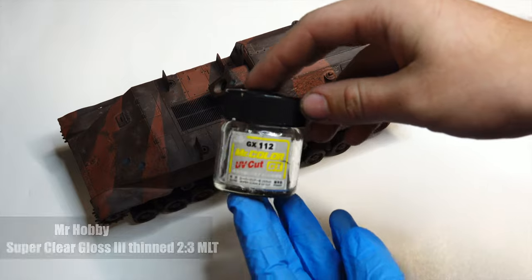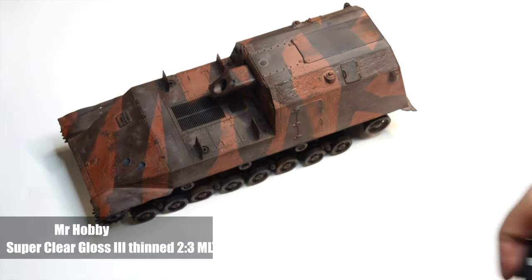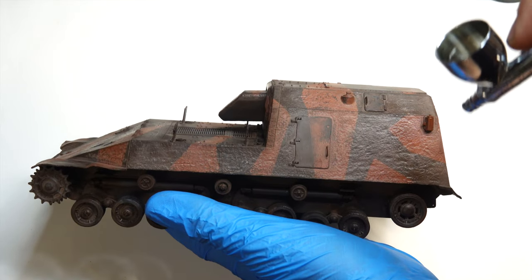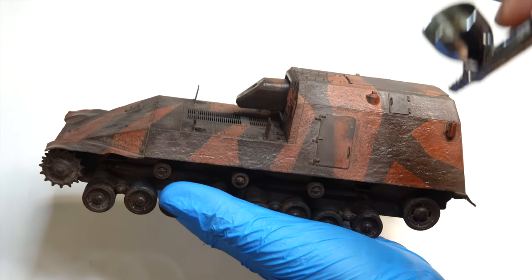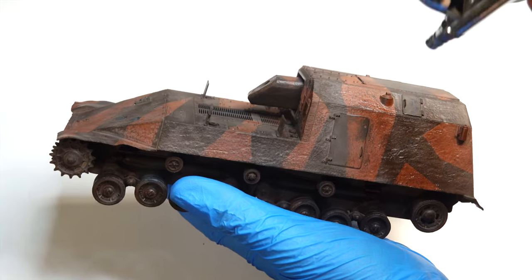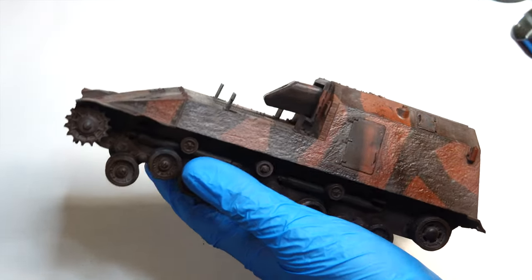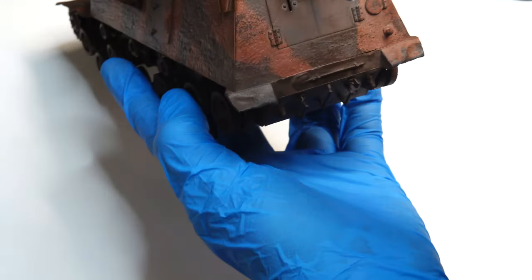Now we get into varnishing the tank. I'm using an already pre-thinned bottle Super Clear Gloss from Mr. Color. I'm laying down a gloss varnish to make it easier and smoother to apply a wash which I'll be doing in the next step. As you can see, the spray quickly changes the tone of the paintwork.